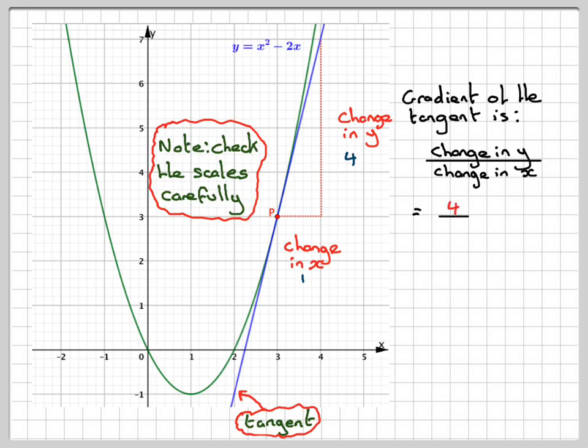So then the gradient is going to be 4 divided by 1. So you need to put some sort of working so the examiner can see what you've done. That gives you an answer of 4. And therefore, the gradient of Y equals X squared minus 2X when X equals 3 is 4.